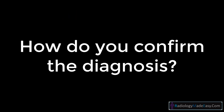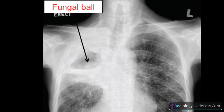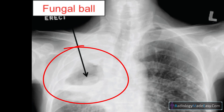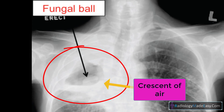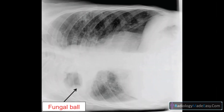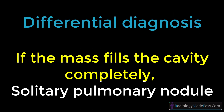Aspergillomas typically appear as rounded or oval soft tissue density masses located inside a cavity and outlined by a crescent of air. Changing the position of the patient usually demonstrates that the mass is mobile, thus confirming the diagnosis. For this purpose, two X-ray views are needed: lateral decubitus and erect. If the mass fills the cavity completely, the differential is that of a solitary pulmonary nodule.